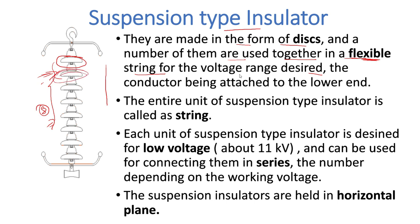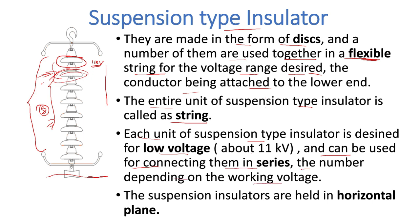The conductor is attached at the lower end. The entire unit of suspension type insulator is called a string. Each unit of suspension type insulator is designed for a low voltage of about 11 kilovolts. When you connect them in series, their voltage ratings get added, so with eight discs you get 88 kilovolts.